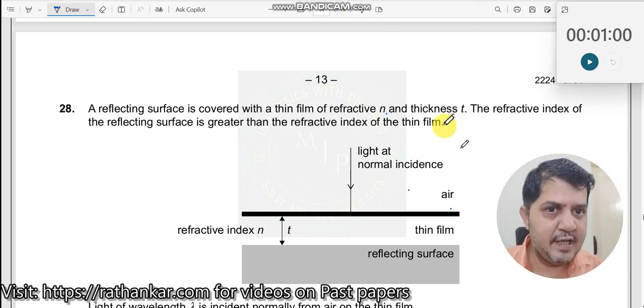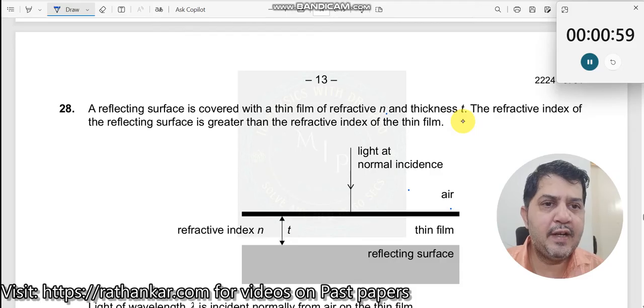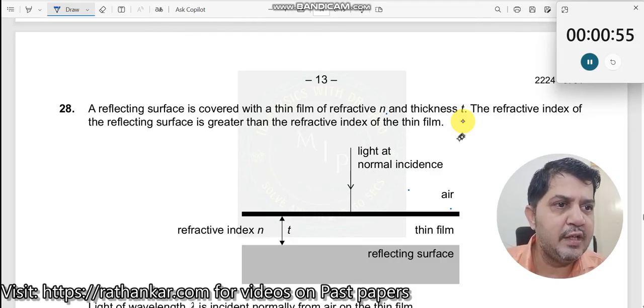Question number 28. A reflecting surface is covered with a thin film of refractive index n and thickness t. The refractive index of the reflecting surface is greater than the refractive index of the thin film.